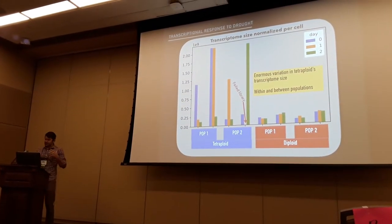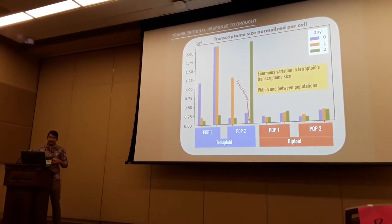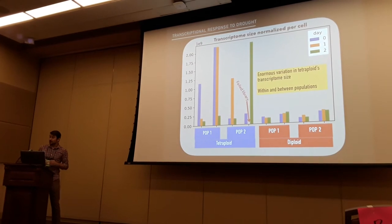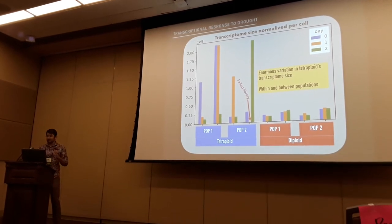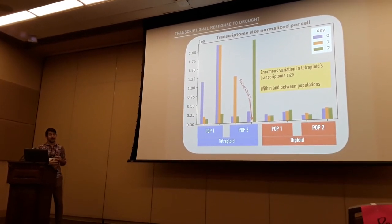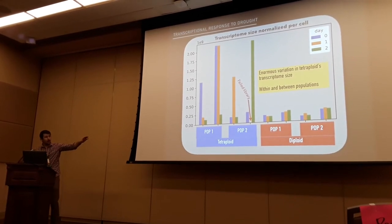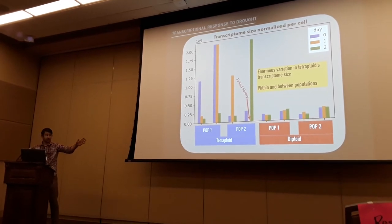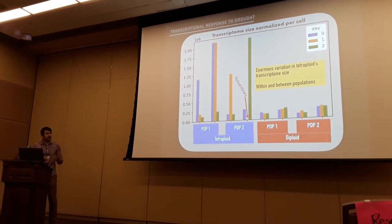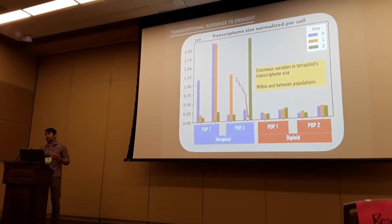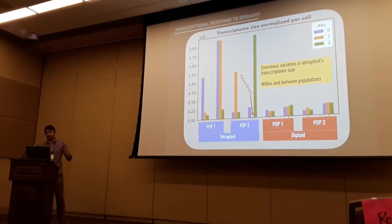We wanted a snapshot of what's happening with the actual transcriptome itself. This is a proxy for transcriptome size — all transcripts normalized per cell, essentially a rough approximation of transcriptome size. The diploids in red, with each individual represented by three bar plots at time zero, 24, and 48 hours, show a little bit of variability — roughly about 30% fluctuation, which is in line with the number of genes typically recruited during drought stress response.